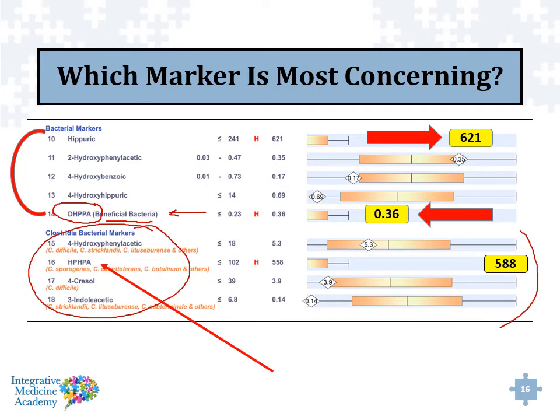And we can correlate that back again to our patient's problem — whether it's a mental health challenge, autism, neurological issue, and so on.